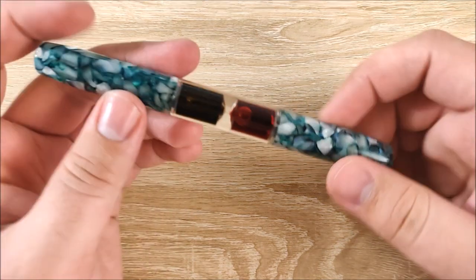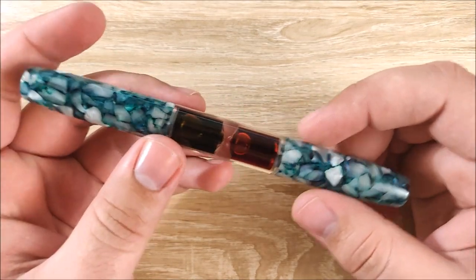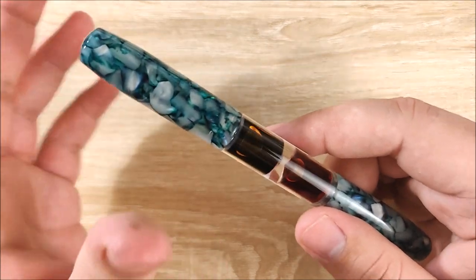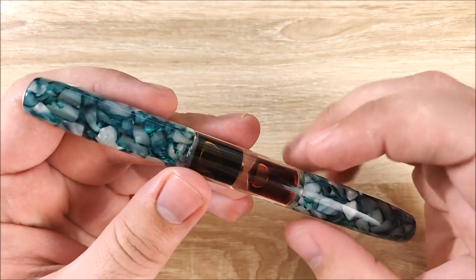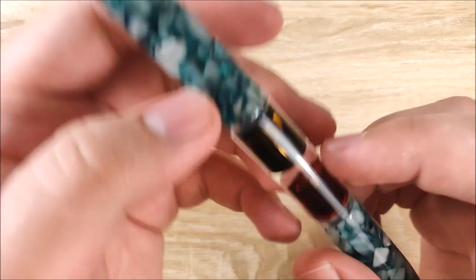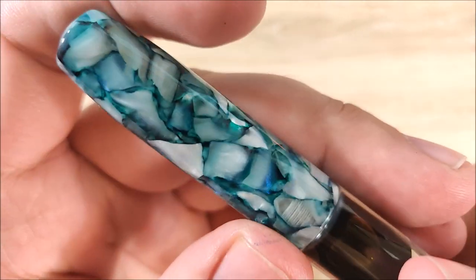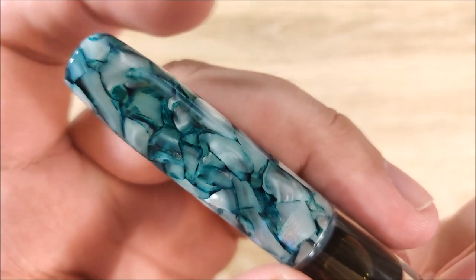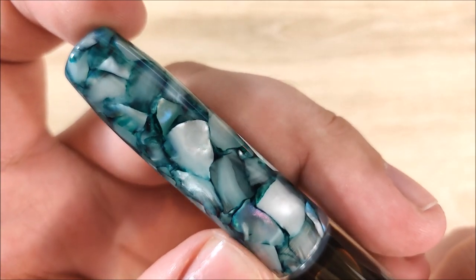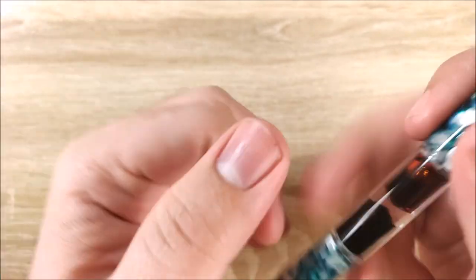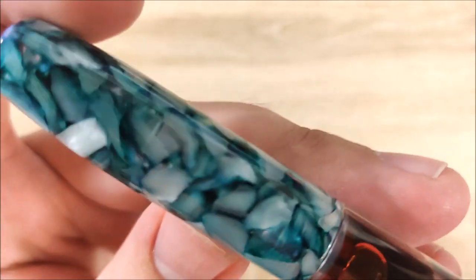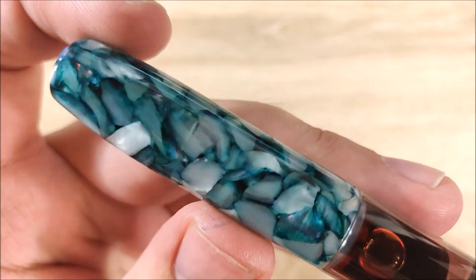All right, on to what I like about the pen. So first up is actually going to be the material. This is available in a few different materials, but this is the first one it was released in. This is called Moon River. And this material is absolutely gorgeous. It really is. There's a lot of depth and chatoyance to it. You can see there's some pink in there, some white, turquoise, green, blue. It's really nice.